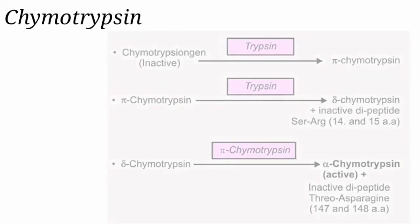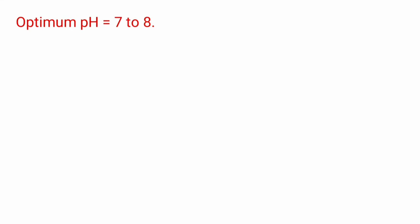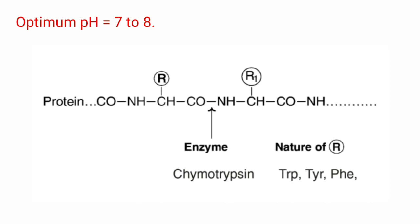Coming to the action of chymotrypsin. Chymotrypsin is secreted as the inactive zymogen chymotrypsinogen, which is activated by trypsin. Once trypsin converts chymotrypsinogen to chymotrypsin, the formed chymotrypsin itself can activate chymotrypsinogen by autocatalysis. The optimum pH of chymotrypsin is 7 to 8. It hydrolyzes peptide bonds connected with carbonyl groups of aromatic amino acids like phenylalanine, tyrosine, and tryptophan.